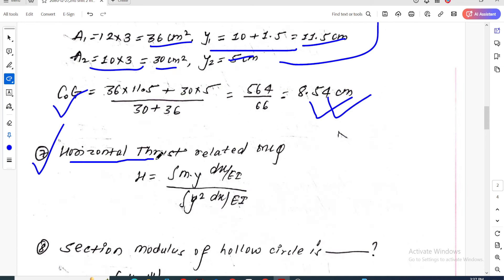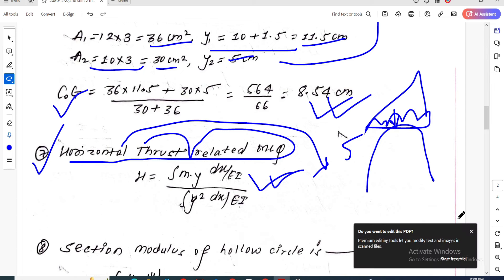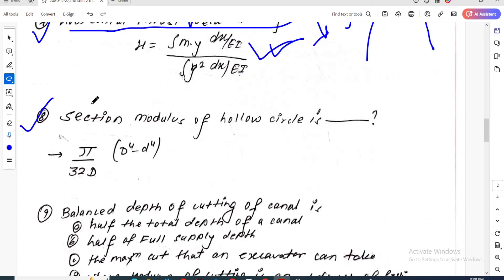Question seven is about horizontal thrust. The formula for circular, parabolic, or semicircular two-hinged arches shows maximum thrust occurs at the crown. The direct formula calculates horizontal thrust based on the arch geometry.